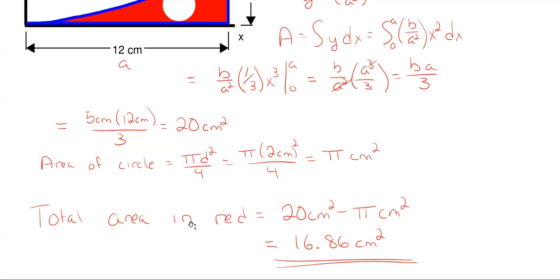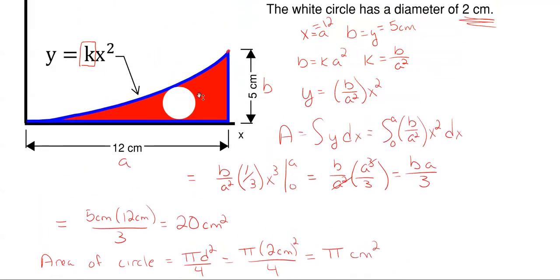So whenever you have a curve of a line or a curve of a shape denoted by some kind of equation, integrating that equation will give you the total area under that line in your boundary conditions, and then you can just subtract off any other shape that is inside that area.